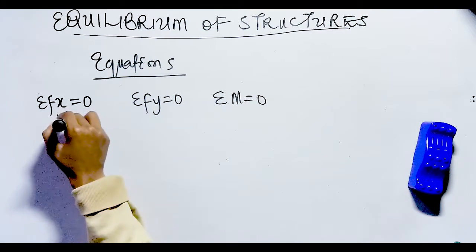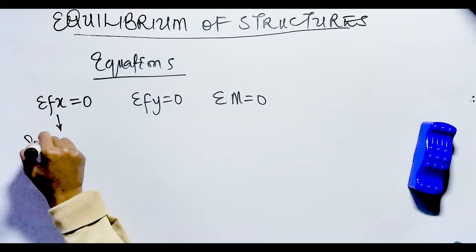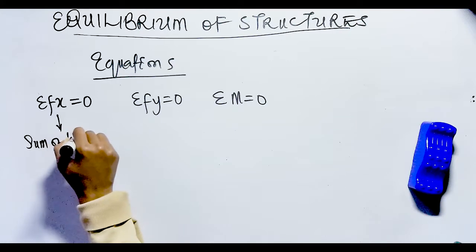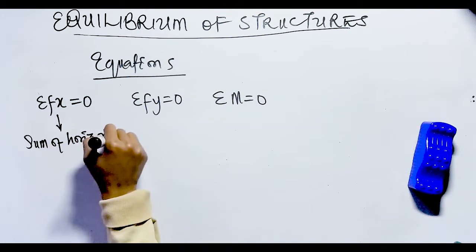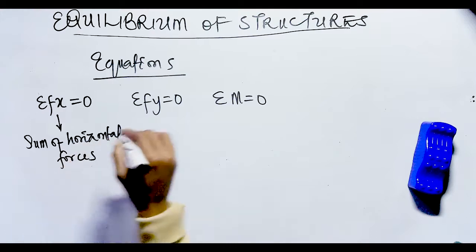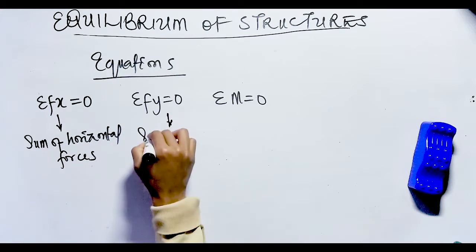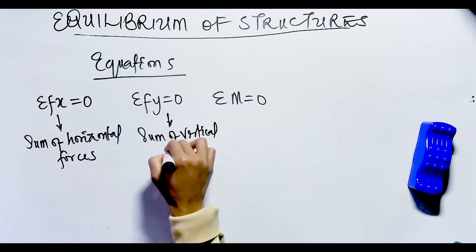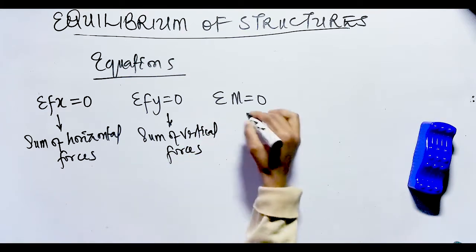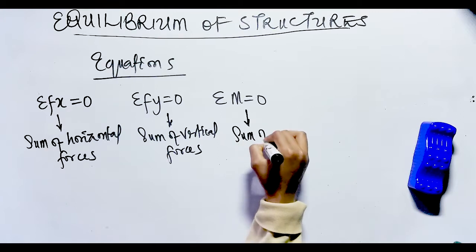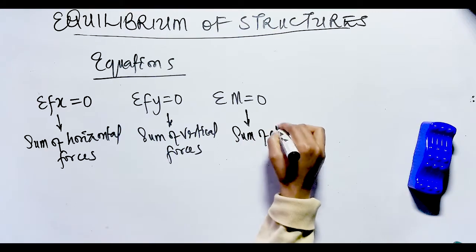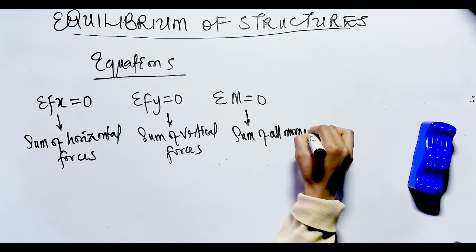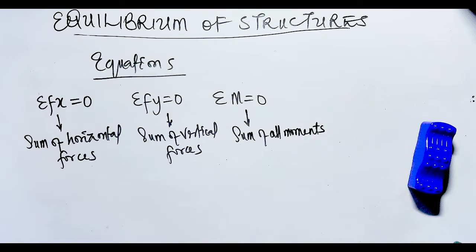Summation of Fx simply means the algebraic sum of the x-components of all forces — in simple terms, the horizontal forces. Summation of Fy means the algebraic sum of the y-components of all forces — in simple terms, vertical forces. Summation of M means the algebraic sum of the moments of all forces about any point in the plane of the structure, and the moments of any couple acting on the structure.